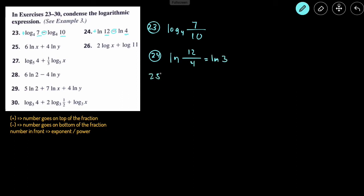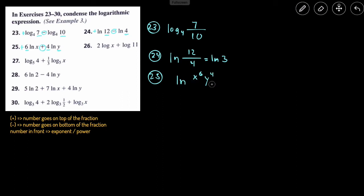Number 25: we see there's ln, which is natural log, so we write ln and set up a fraction. There's a coefficient 6 in front of ln of x — a number in front becomes a power — and there's a positive, so x goes on top with 6 as the exponent: x⁶. There's another positive, so y goes on top with 4 as the exponent: y⁴. Since there's nothing on the bottom, we get rid of the fraction: ln(x⁶y⁴).